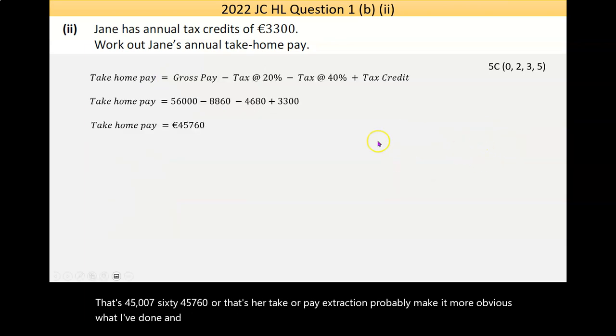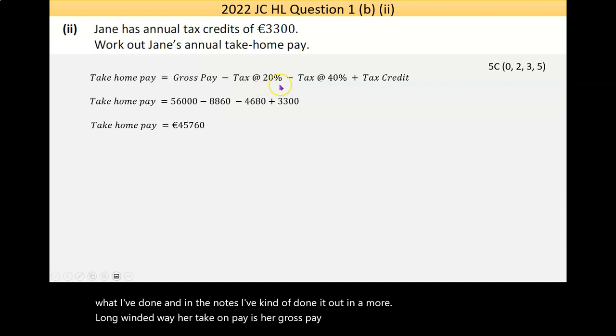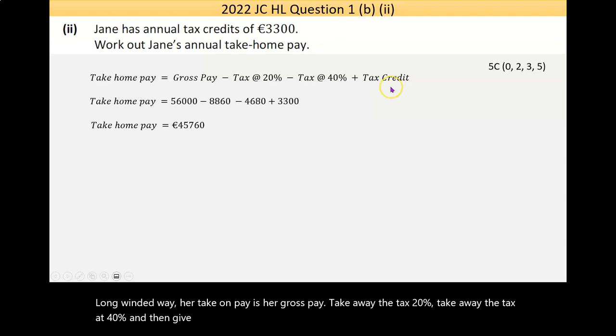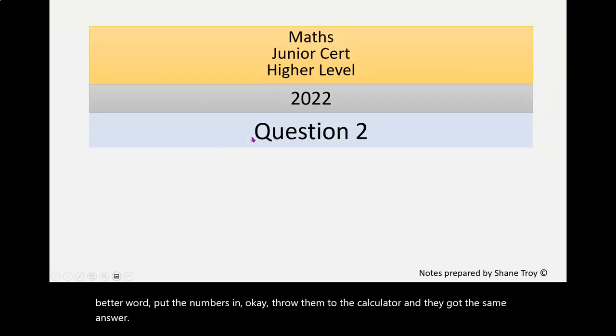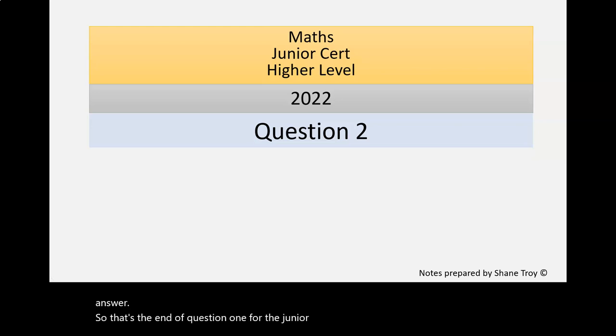Actually, I should probably make it more obvious what I've done. In the notes, I've done it out in a more long-winded way. Her take-home pay is her gross pay, take away the tax at 20%, take away the tax at 40%, and then giving you back what the government lets you away with. Put the numbers in, throw them through the calculator, and I got the same answer. So that's the end of question one for the Junior Cert Higher Level 2022 paper.